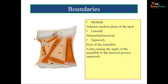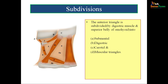This anterior triangle is further subdivided into smaller triangles. The basis of this subdivision is the digastric muscle and the superior belly of the omohyoid. In the figure, you can see the anterior belly of digastric, posterior belly of digastric, and the superior belly of omohyoid marked by E.